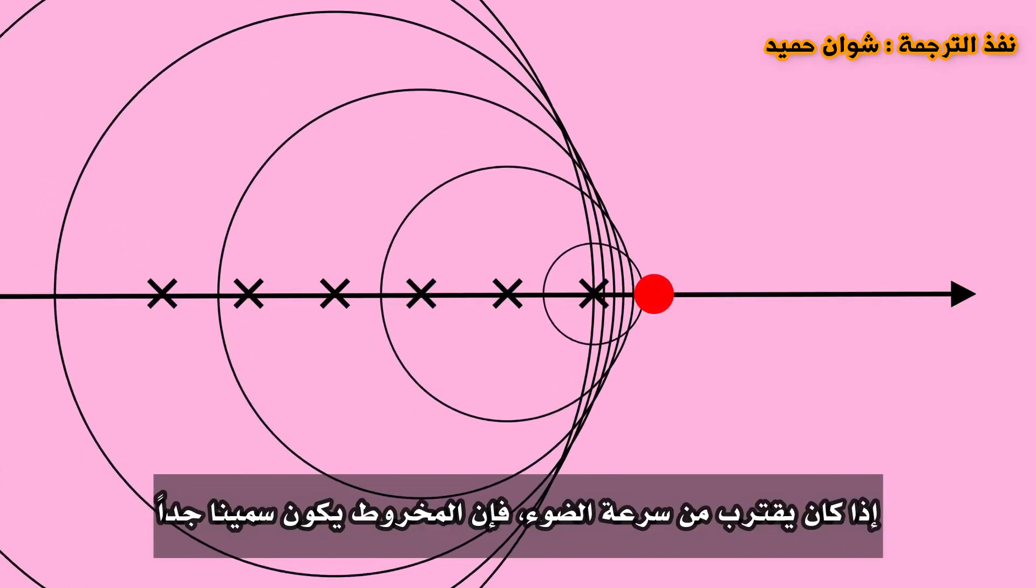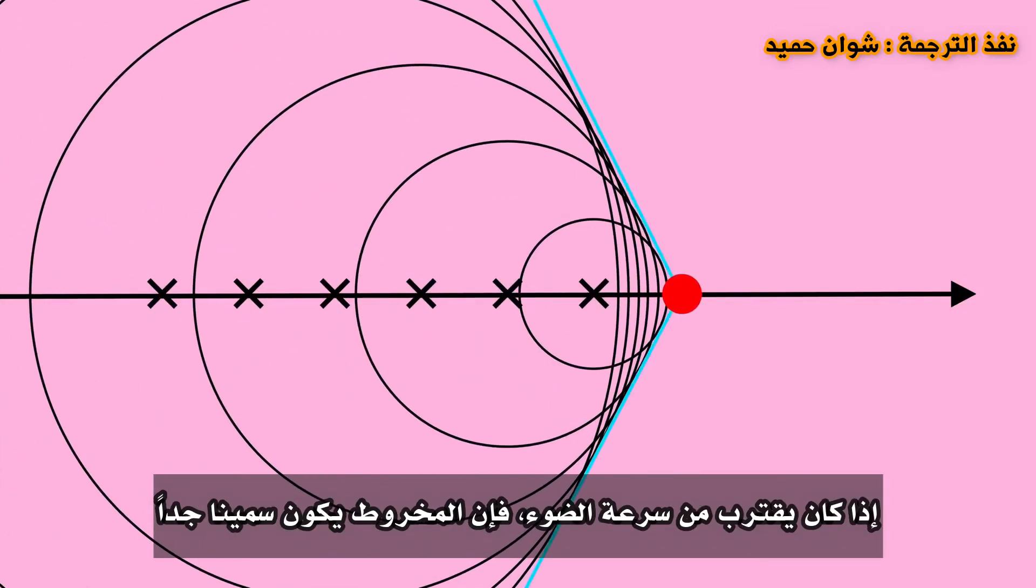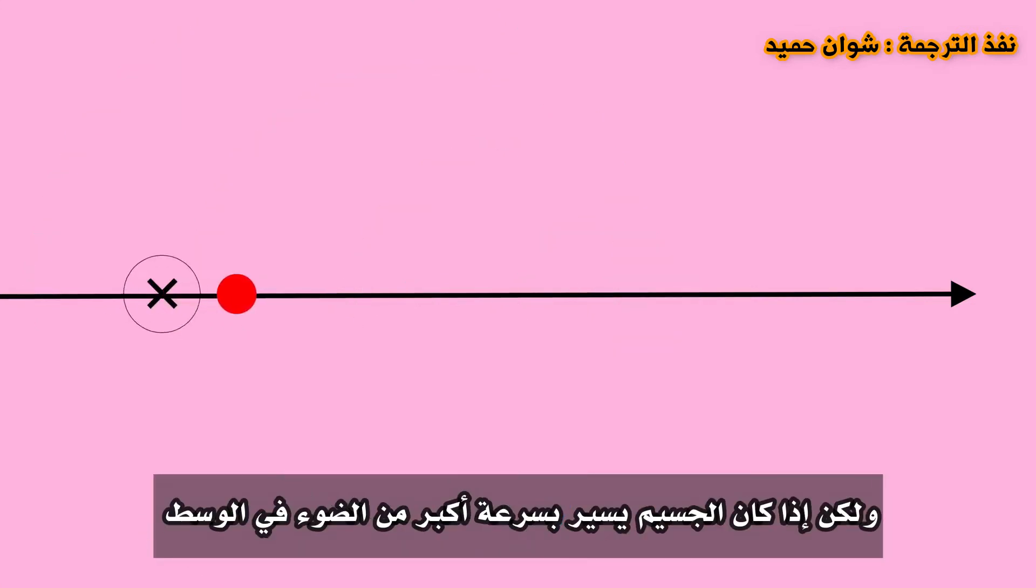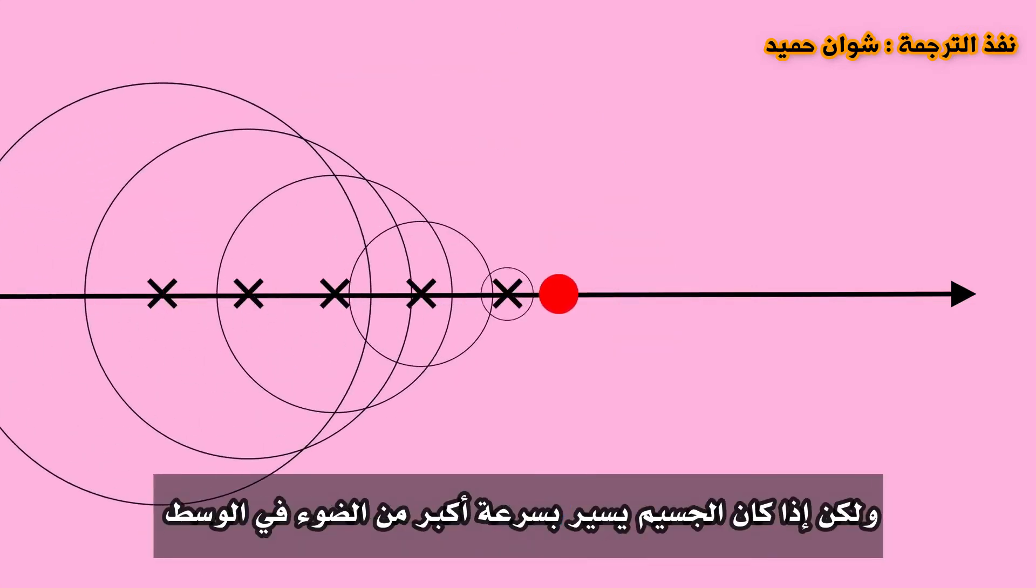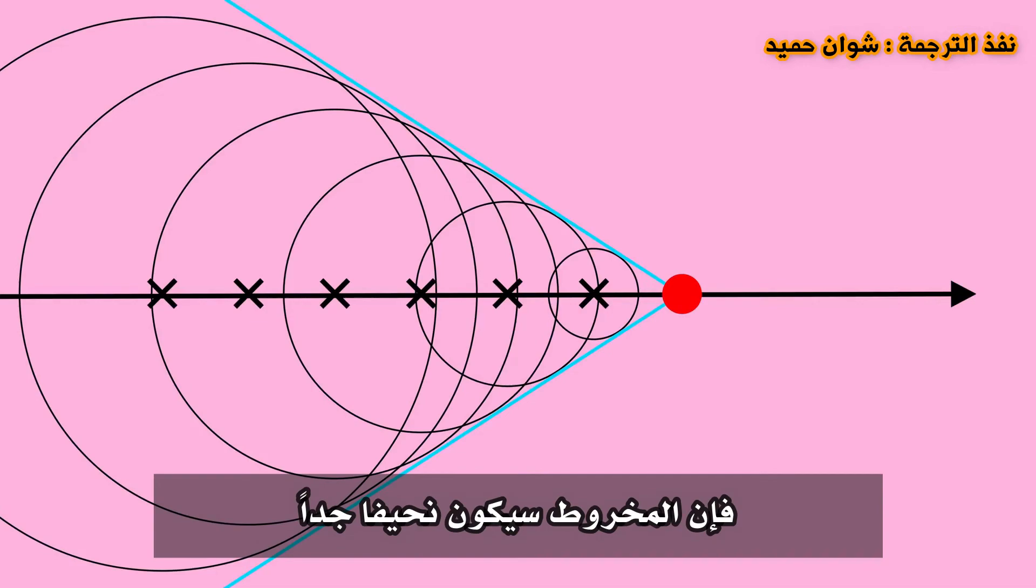If it's going near the speed of light, then the cone is very fat. But if the particle is going much faster than light in the medium, then the cone is very skinny.